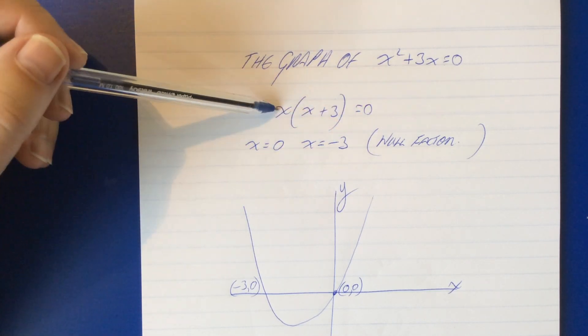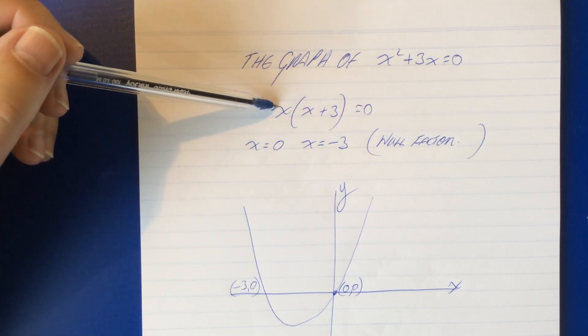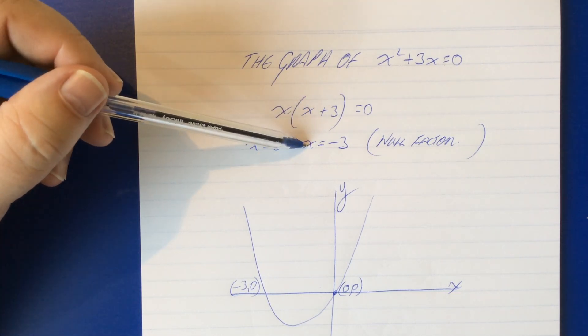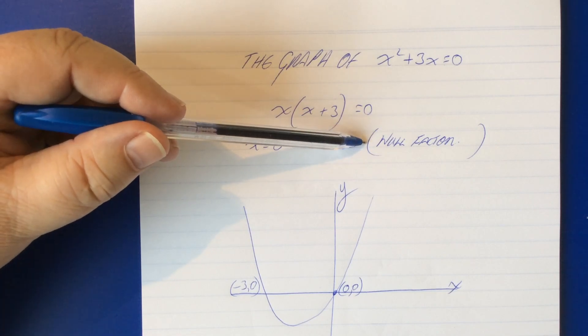How do we make this equal zero? Well either this x equals zero or this x equals negative three. That's just null factor law at work.